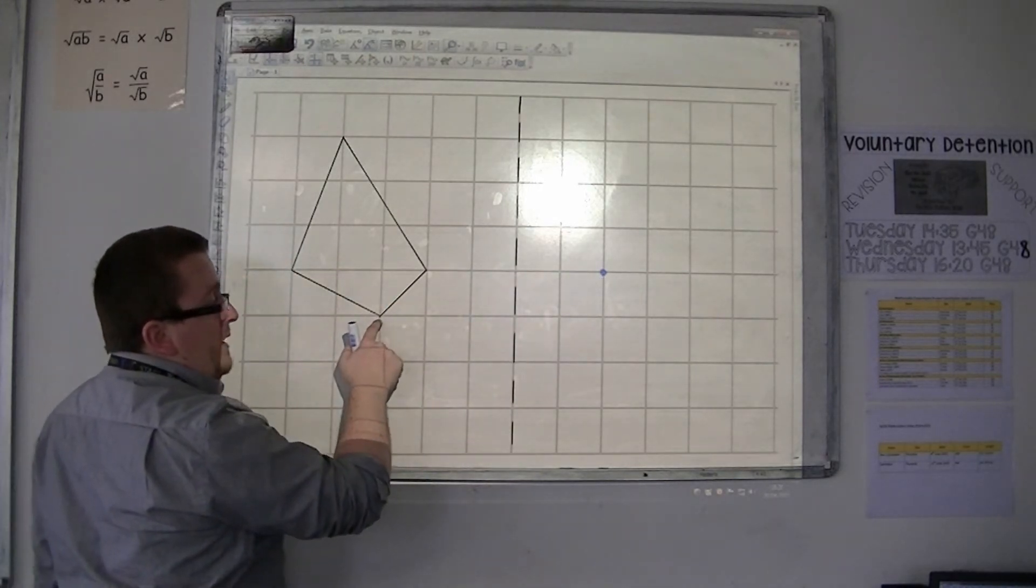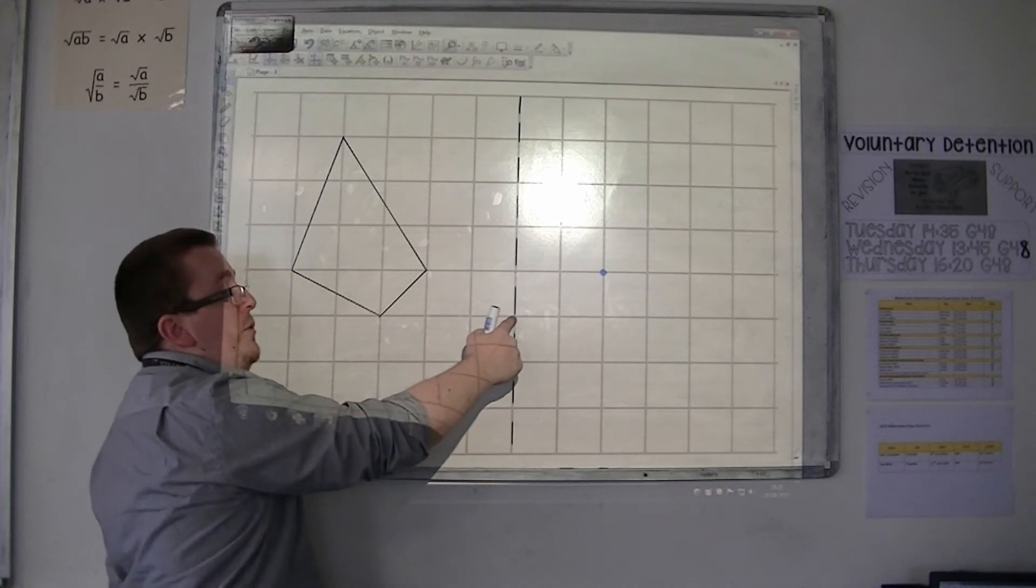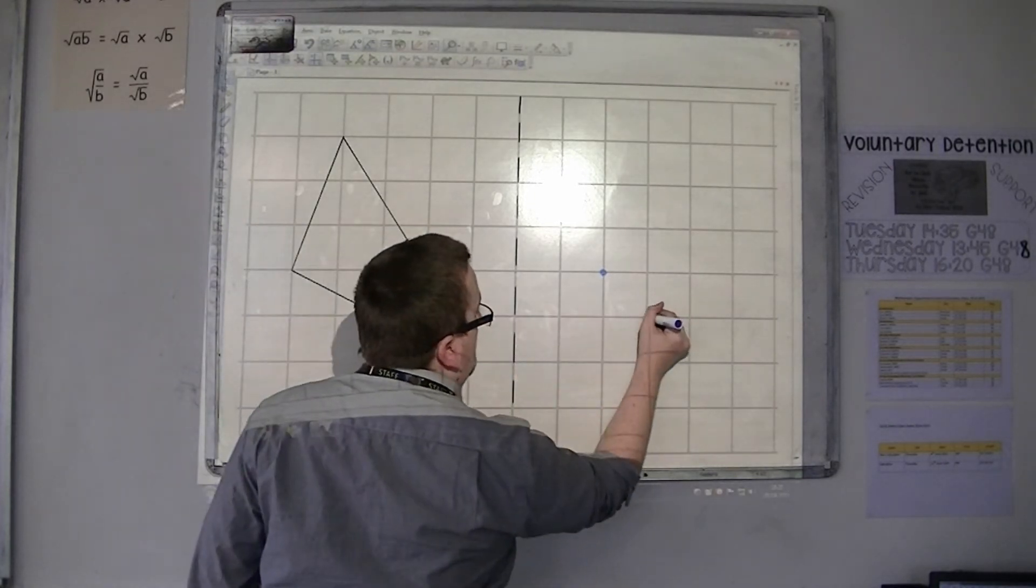This point is one, two, three to the mirror line, so its reflection is one, two, three into the mirror.